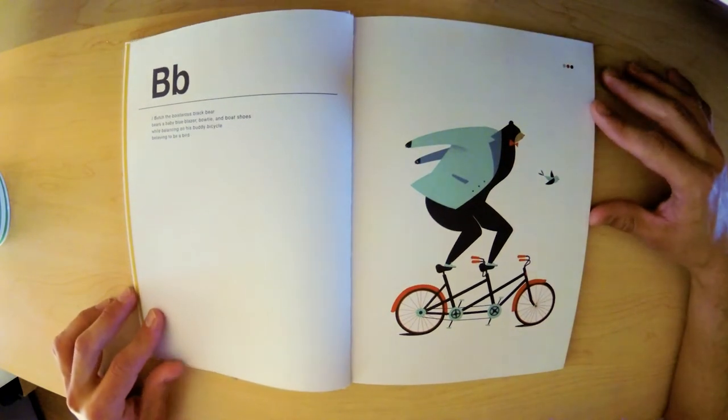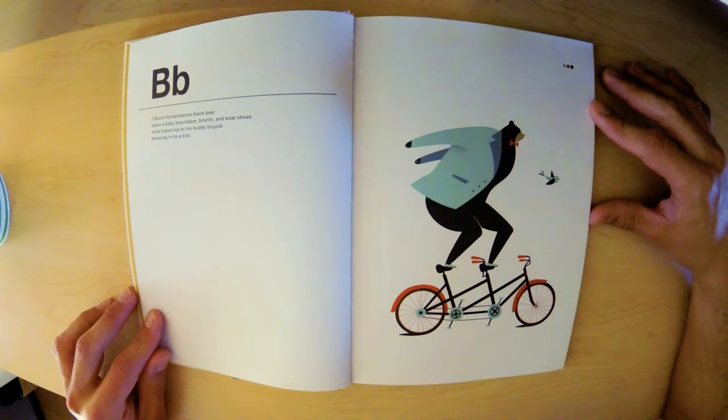B. Butch the boisterous black bear bears a baby blue blazer, bowtie, and boat shoes while balancing on his buddy bicycle believing to be a bird.